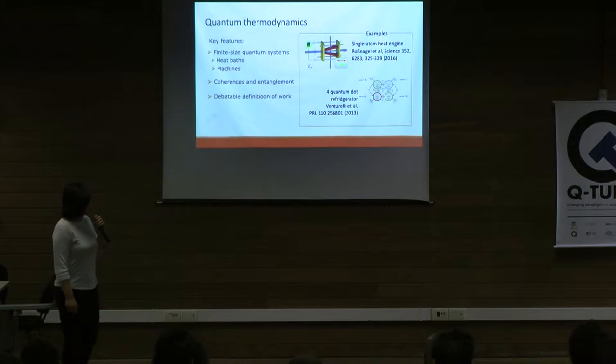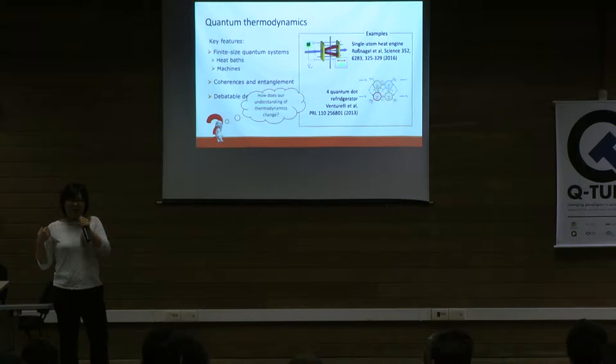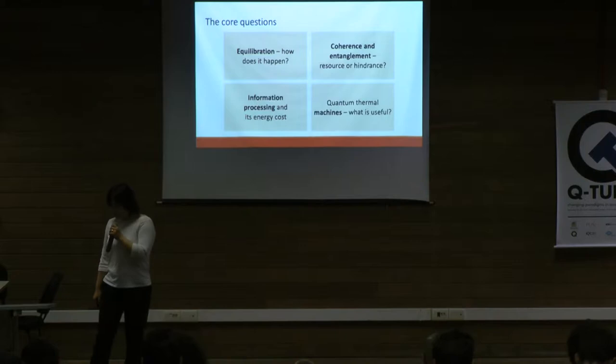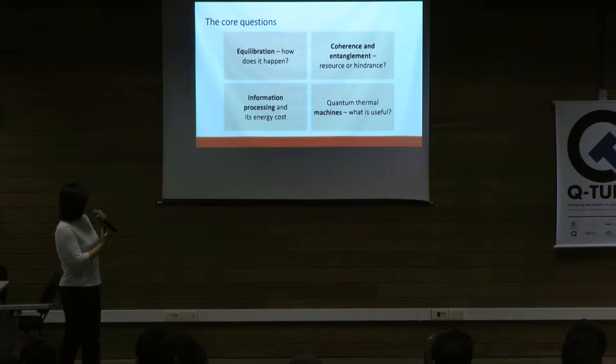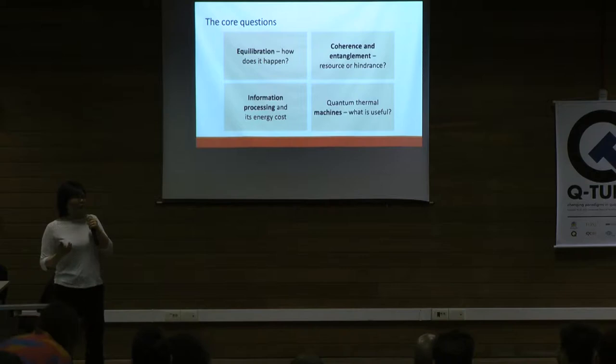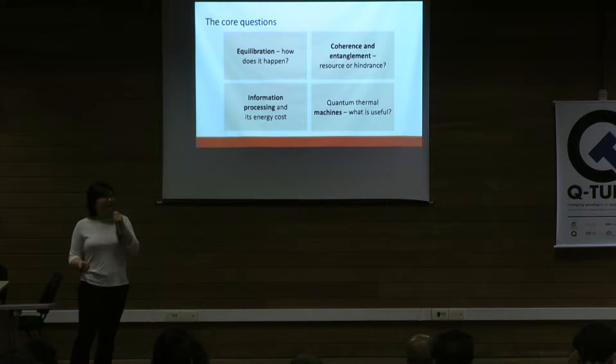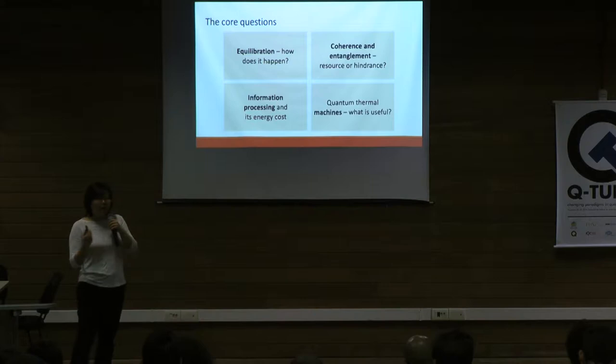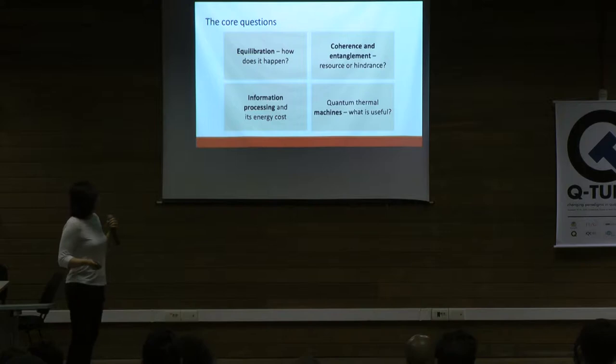The big questions in quantum thermodynamics can be summarised into four categories: the mechanism of equilibration, the energy cost of certain information processing tasks, the effects of coherence and entanglement, and the design of efficient quantum thermal machines. It's interesting to see that in all of these different questions, tools from quantum information have contributed in different ways.